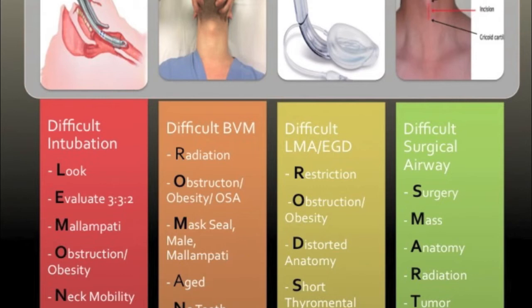For the difficult LMA or extraglottic device, difficulty placing the device is predicted with indicators of a crowded pharynx or abnormal anatomy, while difficulty achieving ventilation occurs if the patient has restrictive lung disease. Difficult surgical airway can be predicted when there are anatomic changes in the neck region that would obscure identifiable landmarks or cause narrowing of the airway, preventing an ET tube or CRIC tube from passing. For more detailed information on these predictors, please visit palmcast.com or visit the Difficult Airway course website.